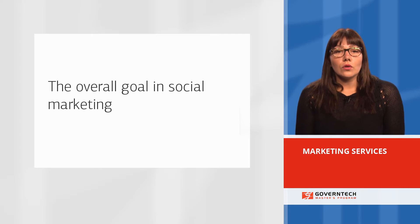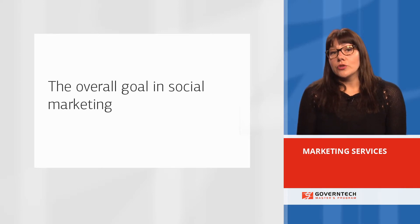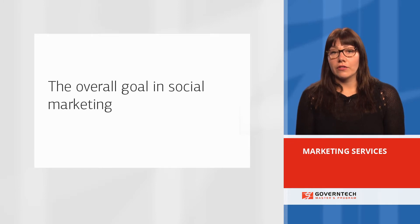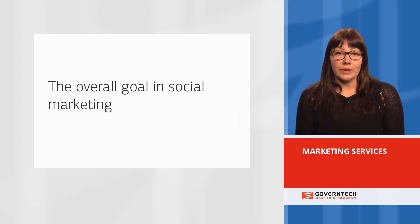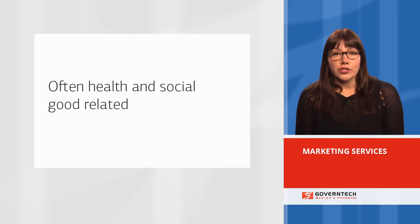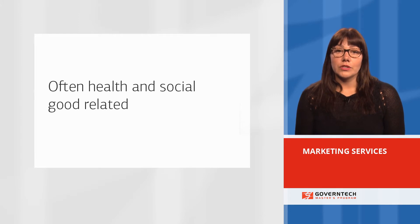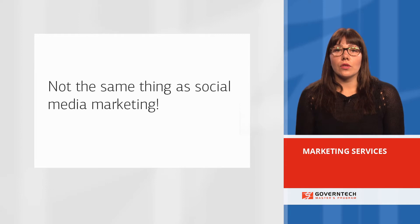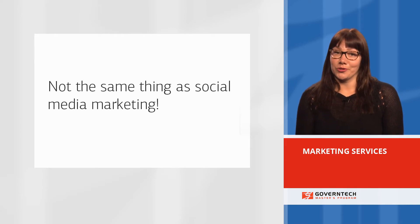The overall goal in social marketing in the public sector is to bring about specific behavioral goals relevant to social good — for example, the prevention of anti-social behavior. These campaigns are often health and social good related. The goal is not to change how people think or how aware they are, but to change and maintain how people behave. It is important to keep in mind that social marketing is not the same thing as social media marketing.